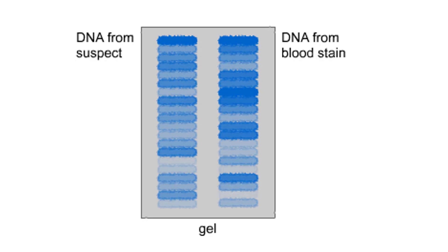After a set time, researchers identify fragments of different lengths by staining the gel or by specifically highlighting fragments that contain tandem repeats.